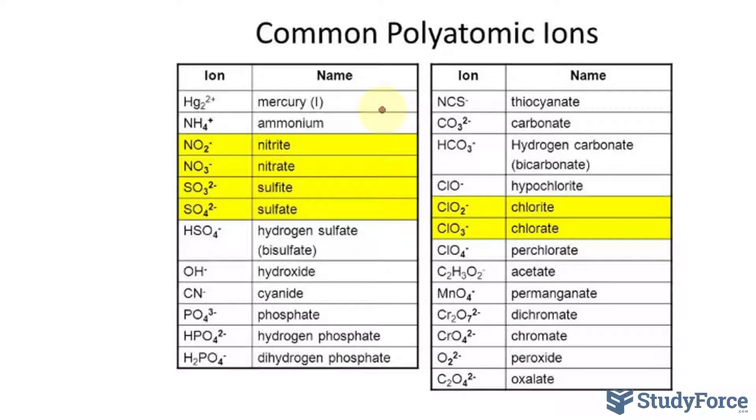Just like nonmetals, polyatomic ions also make a bond with metals. And whenever a polyatomic ion loses an oxygen, their suffix changes from -ate to -ite.